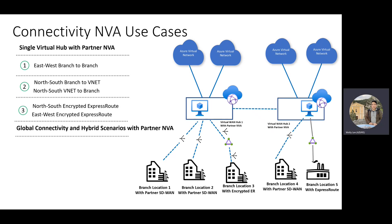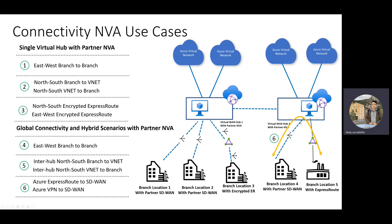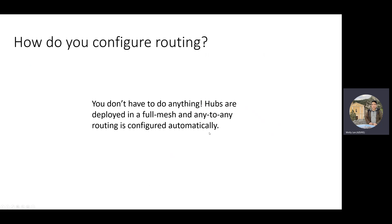Let's say you like the solution a lot, so you decide to expand to, say, Australia. You connect your branches in Australia to the NVA as well, connect some branches via ExpressRoute, and you also have Australian workloads in Azure. You get branch-to-branch across Azure regions over the Microsoft backbone, branch-to-VNet across the Microsoft backbone, and branch-to-branch transit such as ExpressRoute to SD-WAN or VPN to SD-WAN transit. And the best part is you don't have to do anything — the hubs deployed in Virtual WAN are automatically deployed in a full mesh and any-to-any routing is configured automatically. It's very easy for customers to set this up.